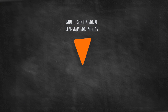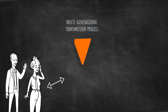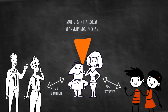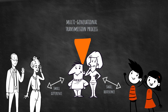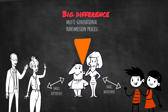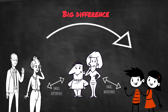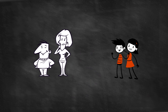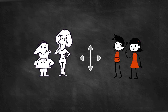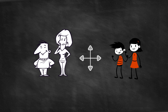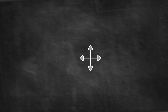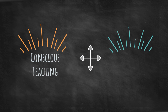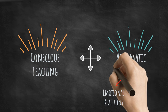The concept of the multigenerational transmission process describes how small differences in the levels of differentiation between parents and their offspring lead, over many generations, to marked differences in differentiation among the members of the multigenerational family. The information creating these differences is transmitted across generations through relationships. The transmission occurs on several interconnected levels, ranging from the conscious teaching and learning of information to automatic and unconscious programming of emotional reactions and behaviors.